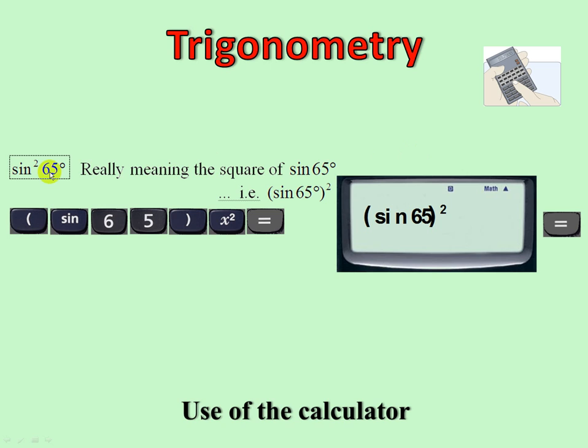Sin squared of 65, you're going to have to put sin of 65 in brackets and then square it. Because that's what sin squared means, that being sin of 65 all squared.